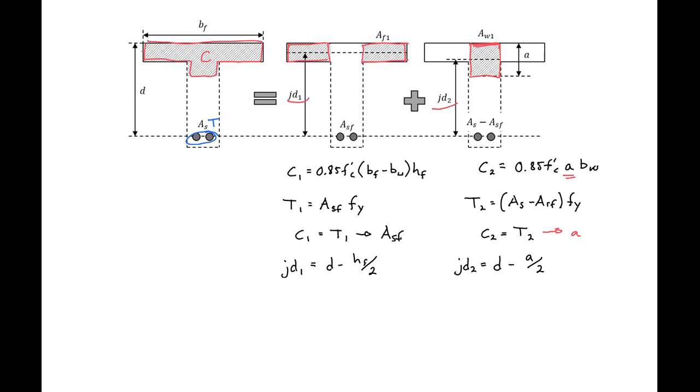We can then find our nominal moment capacity equal to asf times fy times d minus hf over 2, a component from the first section.